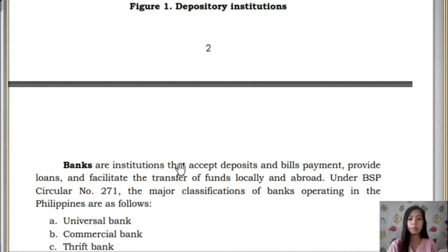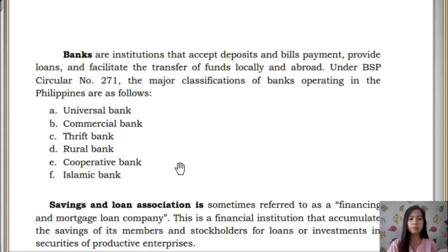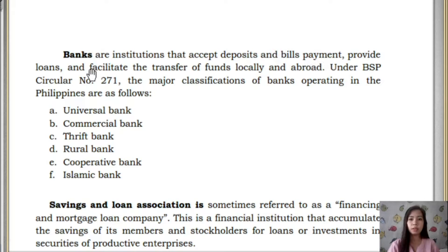First, we have banks. We are familiar with banks. In our municipality, we have BDO, Land Bank, Producers Bank, and FICO Bank. Banks are institutions that accept deposits and bills payments, provide loans, and facilitate transfer of funds locally and abroad. Under Bangko Sentral ng Pilipinas Circular Number 271, these are the major classifications of banks operating in the Philippines.